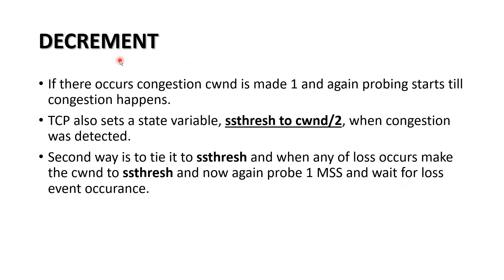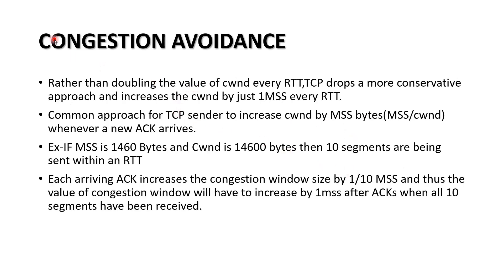How to decrease the rate: if congestion occurs, the congestion window is set to one MSS, reducing the data rate to one MSS. Also, TCP sets a state variable SS thresh to congestion window divided by two when congestion is detected. In a second approach, the congestion window is set equal to SS thresh, so it decreases to the half value. In the next video we will be talking about congestion avoidance.